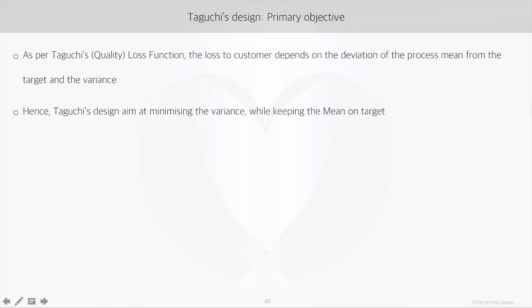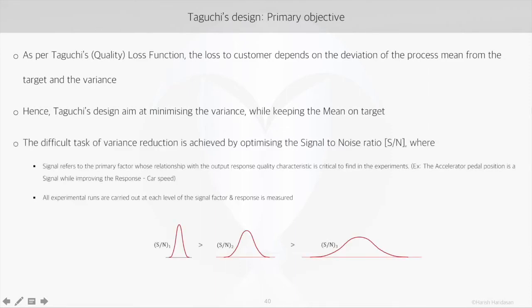From an objective point of view, Taguchi's design aims at minimizing the variance while keeping the mean on target. The objective of variation reduction while maintaining mean at the target is achieved by optimizing the signal to noise ratio.